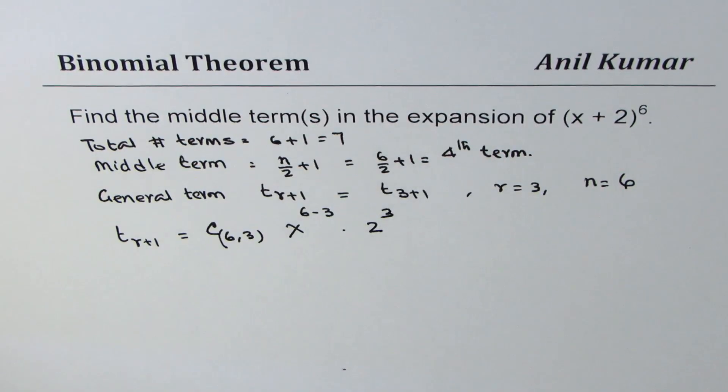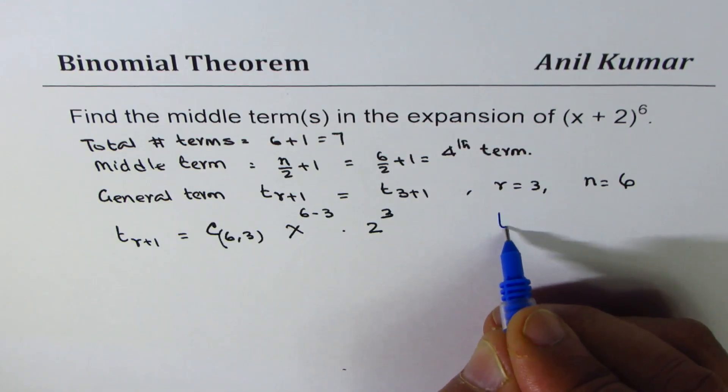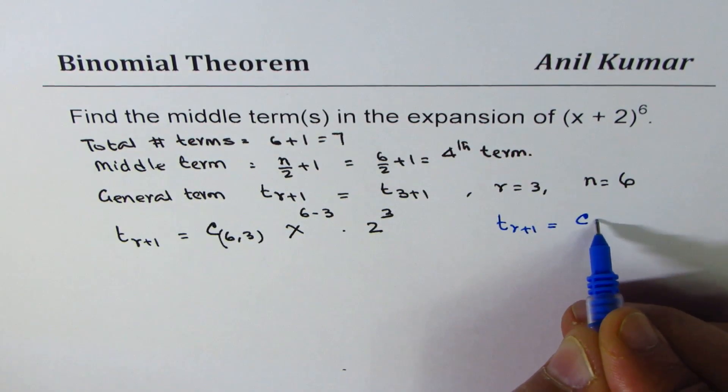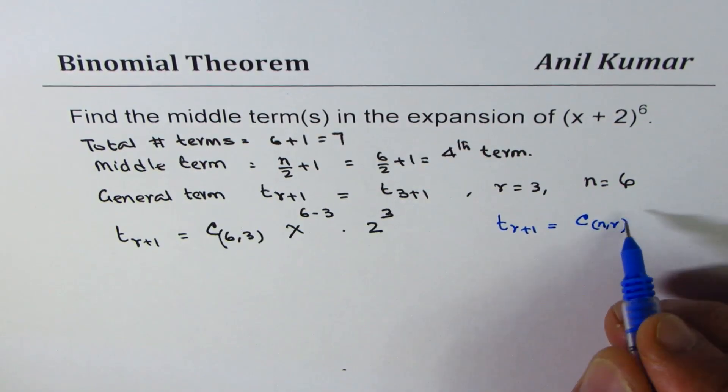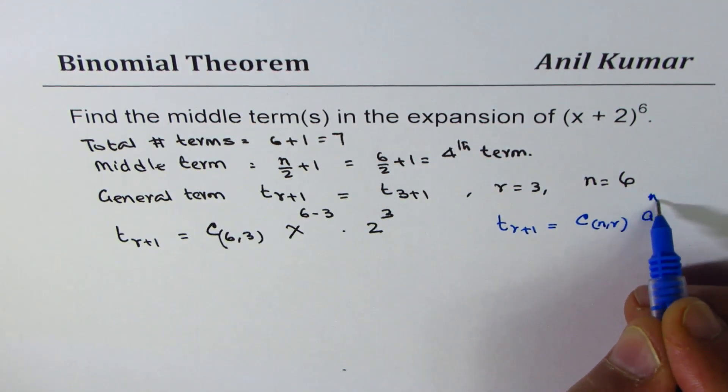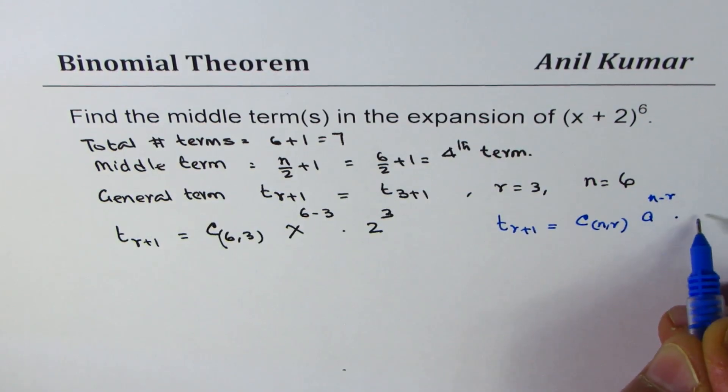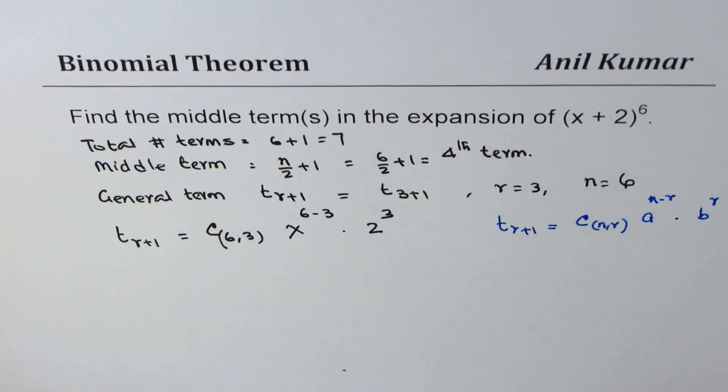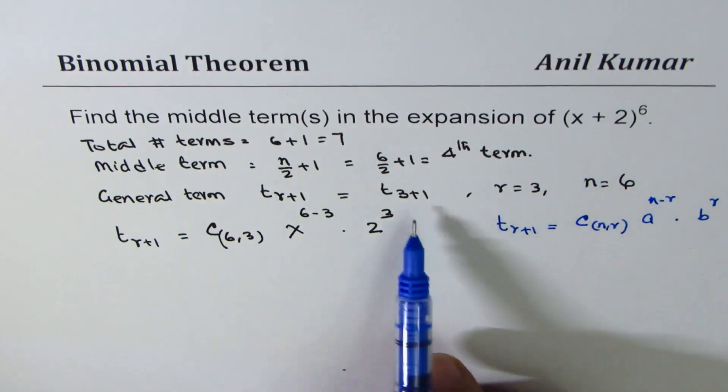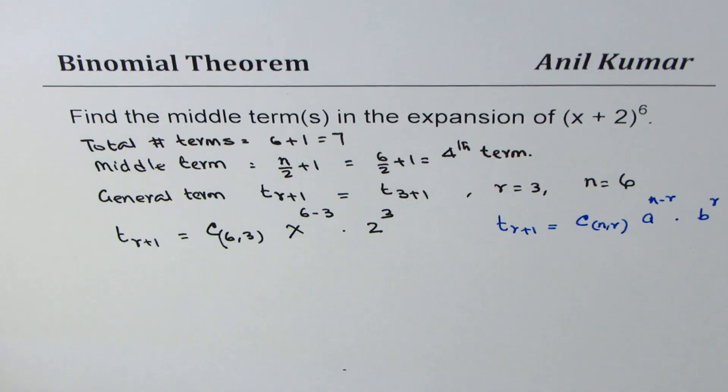Here we have used a general formula which is T_r+1 equals C(n,r) times a to the power of n minus r, times b to the power of r. Substituting the value of a as x, b as 2, n as 6, and r as 3, we can get our result.